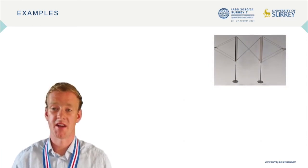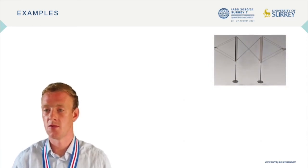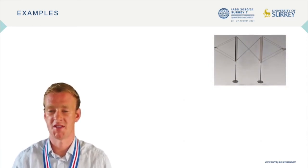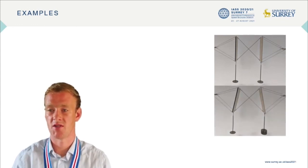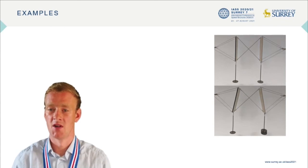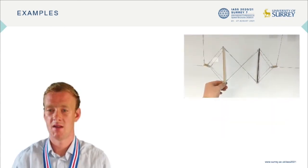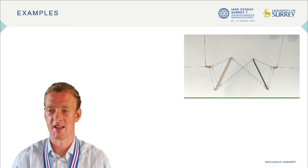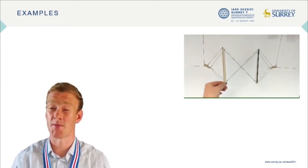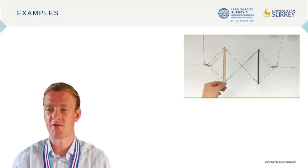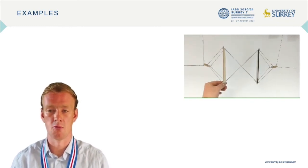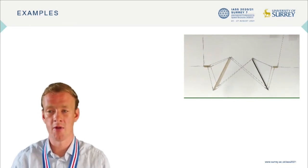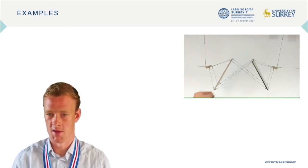A similar tensegrity structure with cross central members also possesses one mechanism and one state of self-stress. The stability of this structure is more sensitive to the geometry. One example is stable and so when loaded can support the applied load. In a contrasting example, the angle between the wires at the end of the plywood is less than 90 degrees, making the framework unstable — it cannot even support its own weight. Even though this is an equilibrium solution, it is not a stable one.